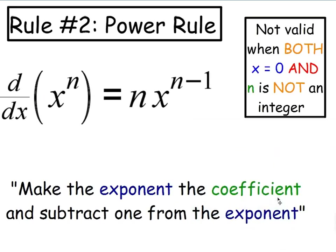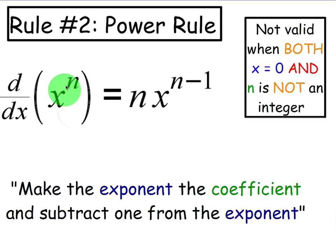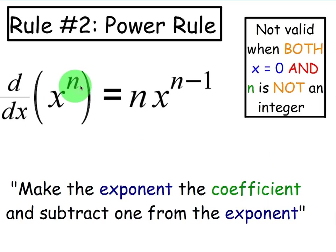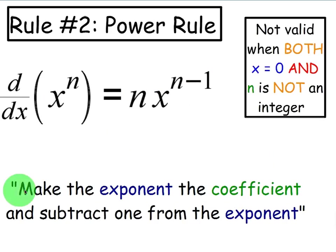Now that we've taken a look at the proof of the power rule, let's go ahead and apply it. We've just learned that the derivative of x to any exponent that's a number — the shortcut is to take that number, move it, make it the coefficient of the variable, and then subtract 1 from the original exponent. In words: make the exponent the coefficient, subtract 1 from the exponent.